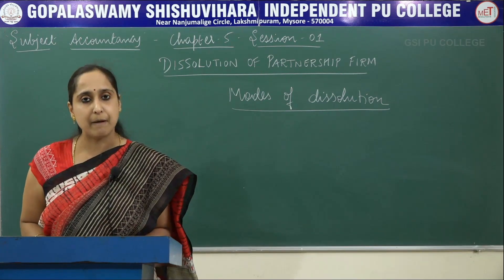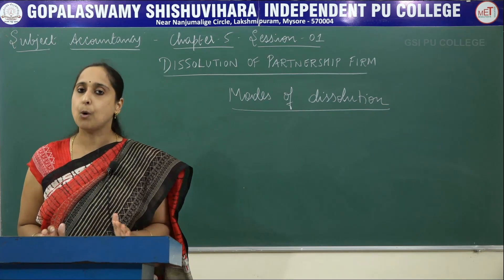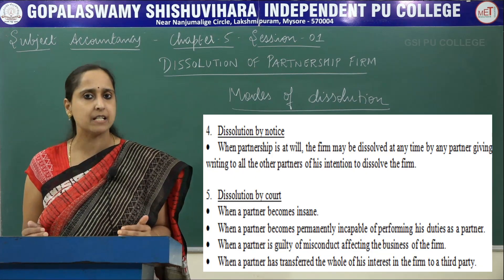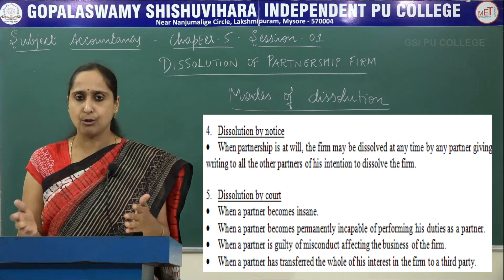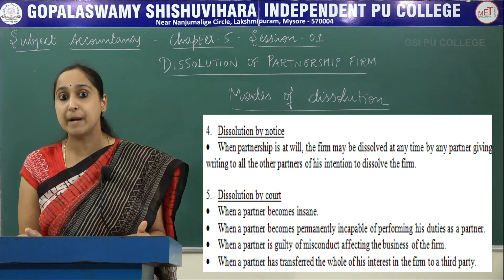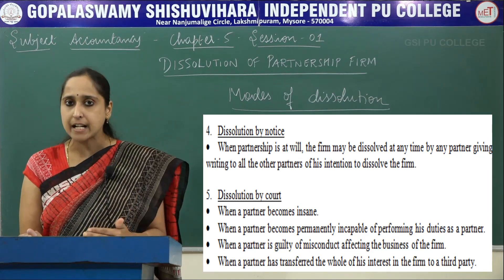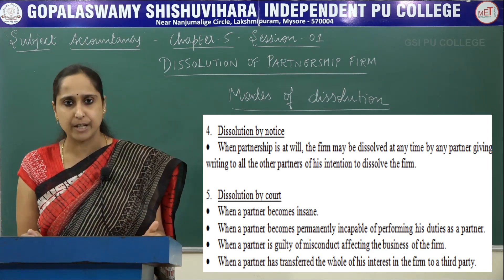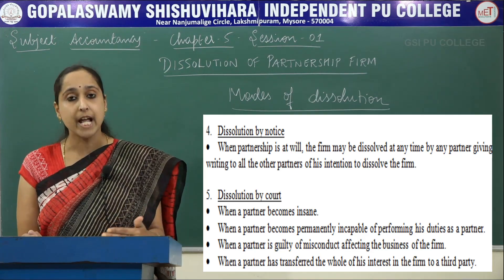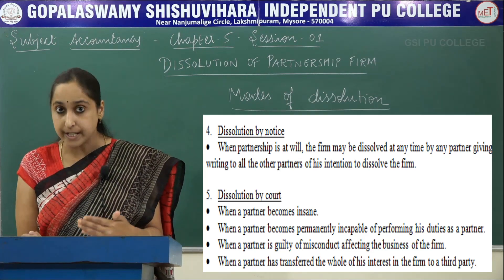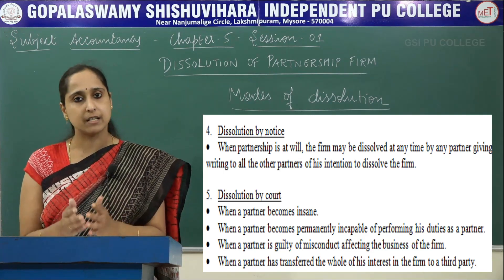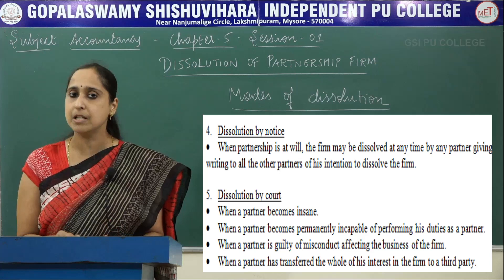Next is Dissolution by Notice. In a partnership at will, if one of the partners feels they should close down the business, he should send a notice to the remaining partners. He must send a notice and take their consent. If all the partners agree to discontinue the business, then the firm is dissolved.